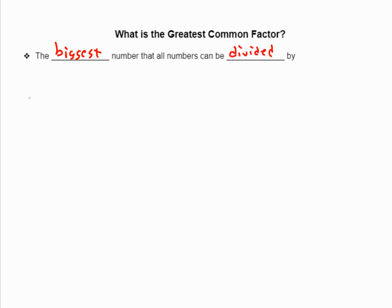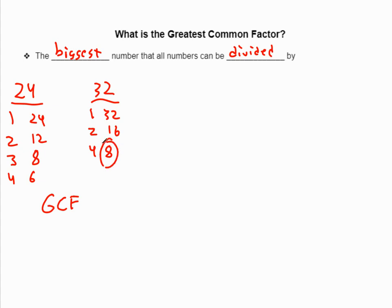For example, if I looked at 24 and 32, and I listed out their factors, 24 is 1 times 24, it's 2 times 12, it's 3 times 8, and it's 4 times 6. 32 is 1 times 32, 2 times 16, 3 doesn't go into it, 4 times 8, and that's it. So if I found the GCF of those two things, it's just the biggest number that shows up on both lists, which in this case is 8.